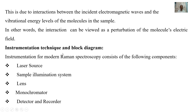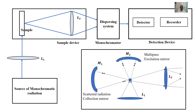Instrumentation technique and block diagram. Instrumentation for modern Raman spectroscopy consists of the following components: laser source, sample illumination system, lens, monochromator, detector, and recorder. This is the block diagram of the Raman spectrometer.